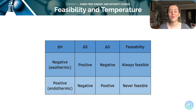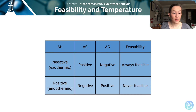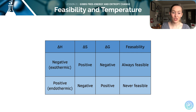Here's a useful table. It shows us that if a reaction is exothermic and has a positive entropy change, then the reaction is feasible and the Gibbs free energy change is always going to be negative. Conversely, if a reaction is endothermic and it has a negative entropy change, then according to our calculation the reaction will not be feasible because our Gibbs free energy value that comes out would have to be a positive number.